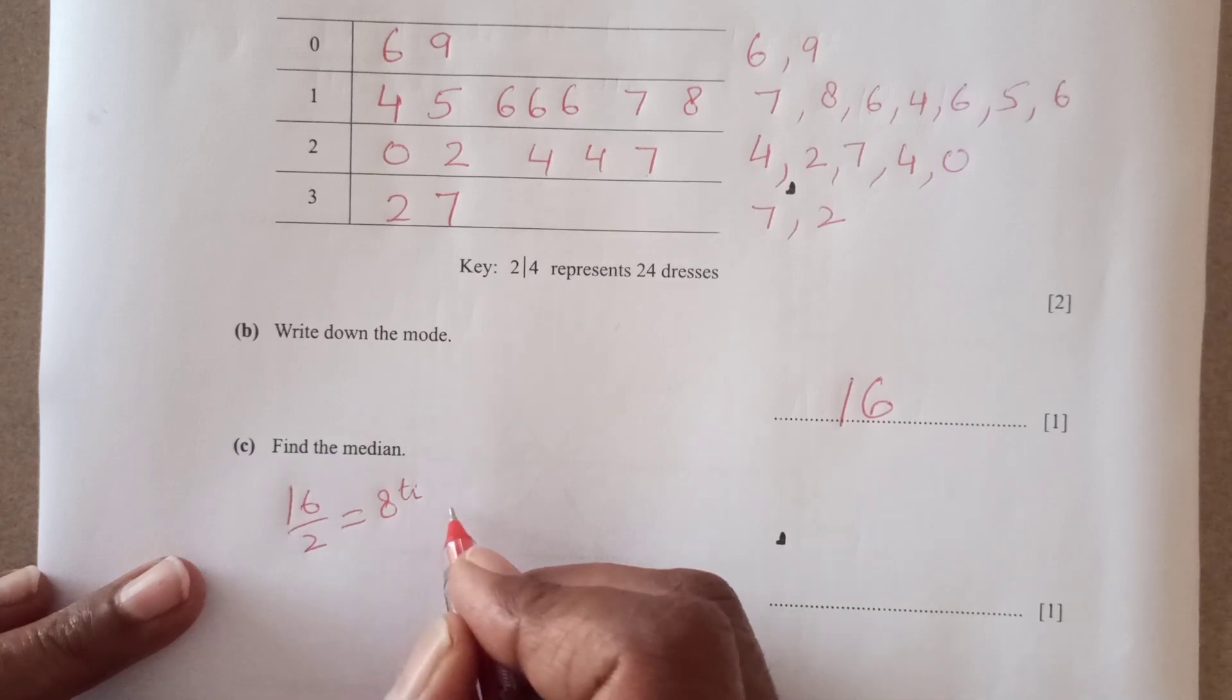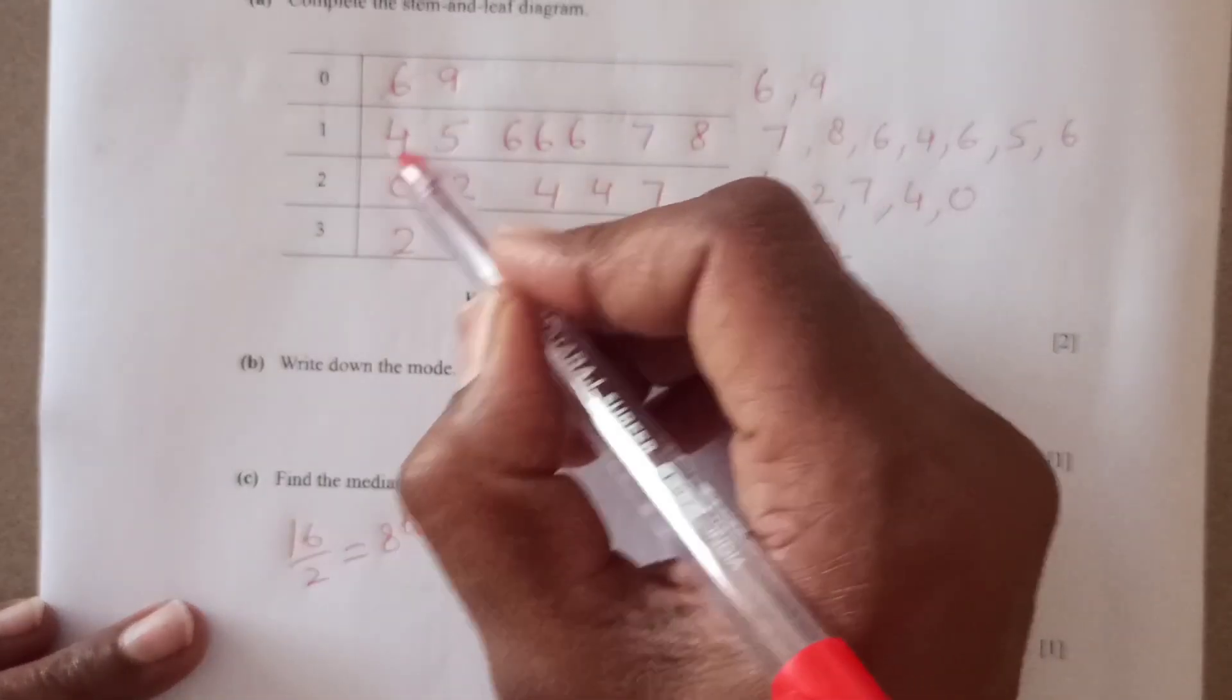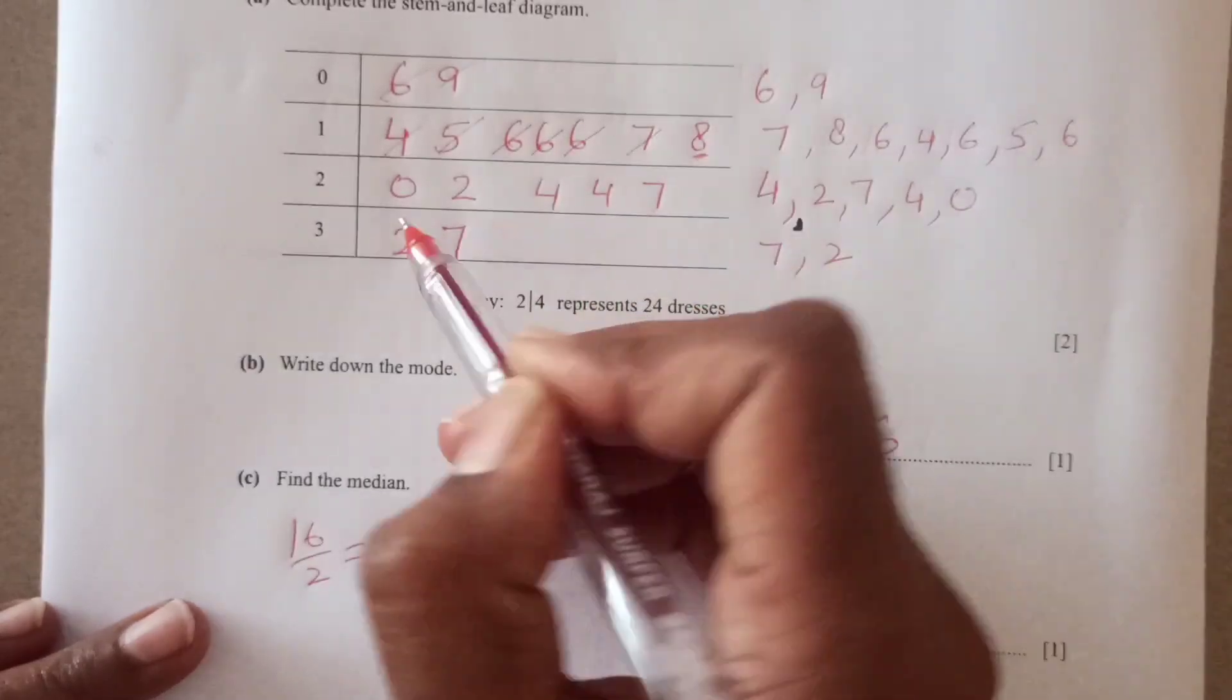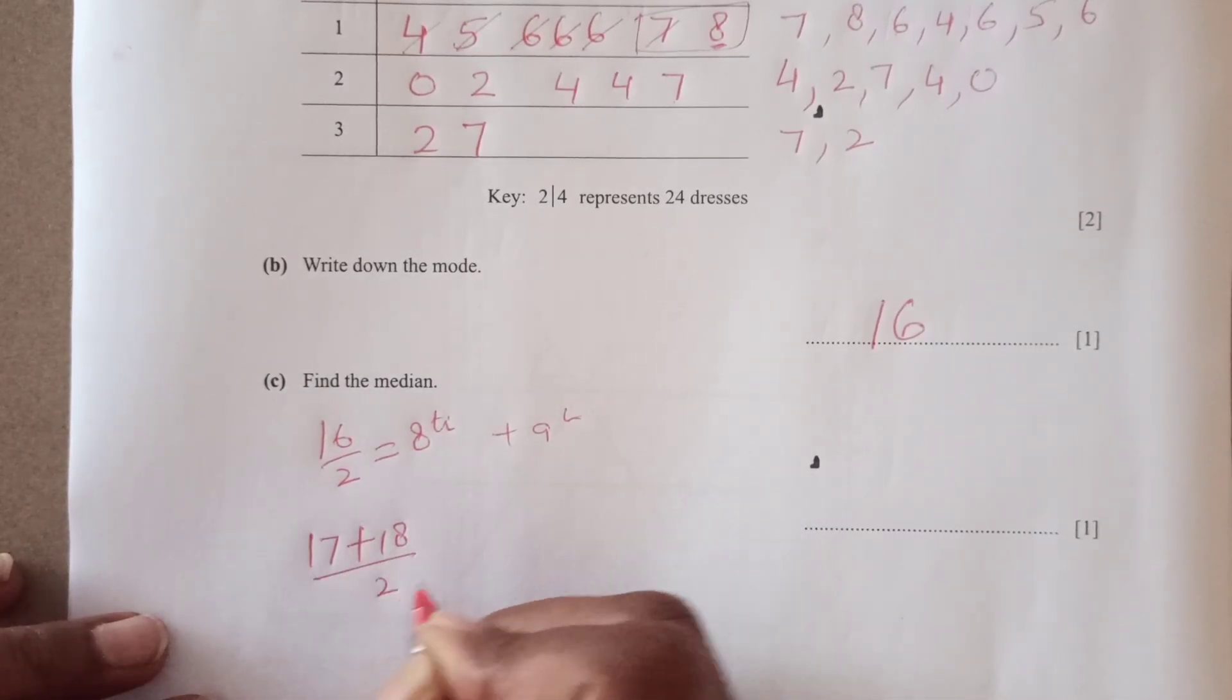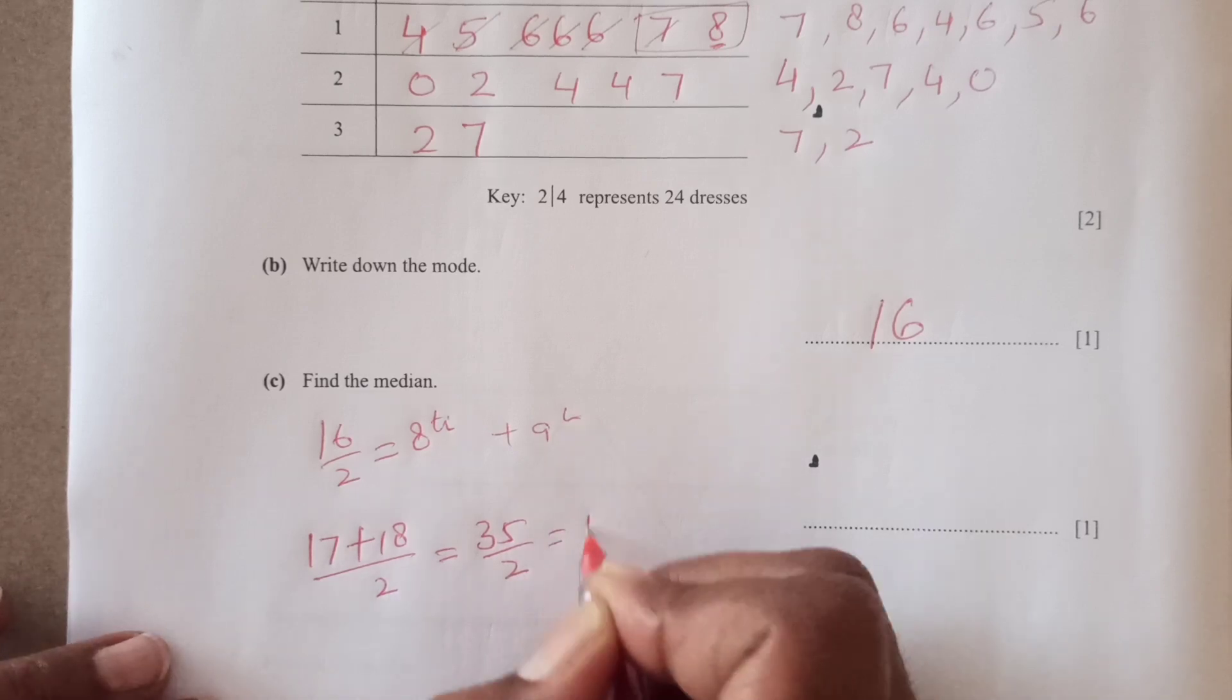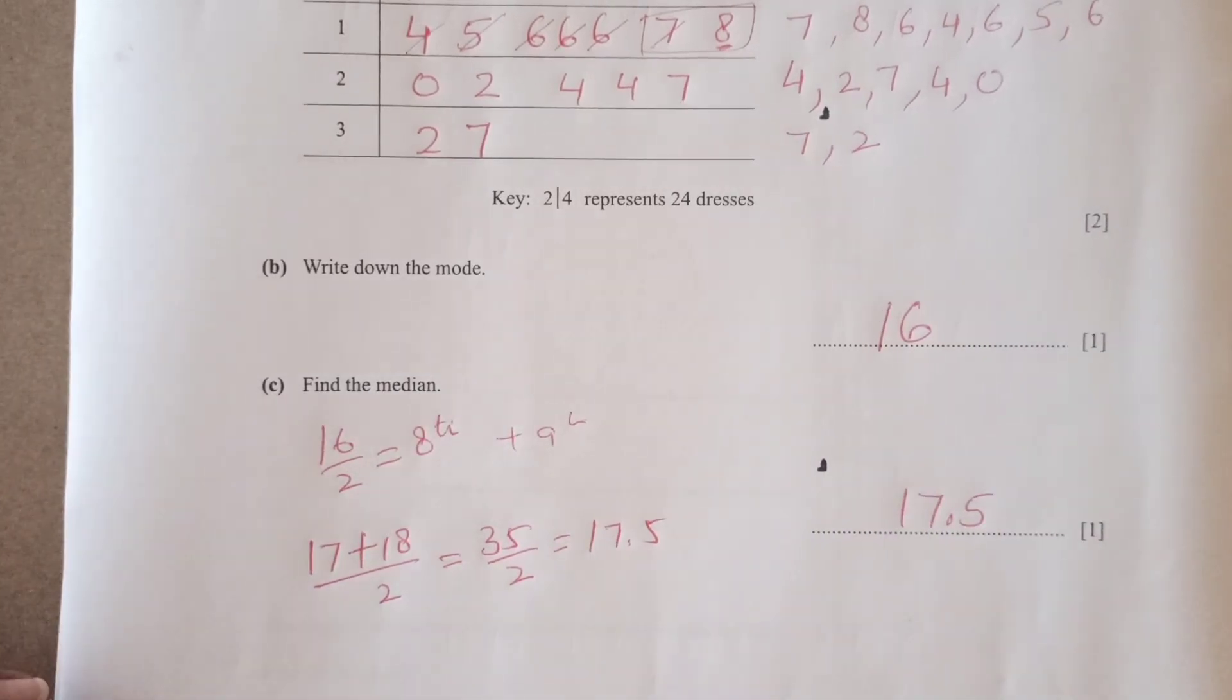The 8th and 9th because this is an even number. So we will take the 8th plus the 9th value and divide. 1, 2, 3, 4, 5, 6, 7, 8 and 9. So we have 8 and 9. We have here 17 plus 18. 17 plus 18 over 2, 35 over 2 that is 17.5. 17.5 is the final answer, right?